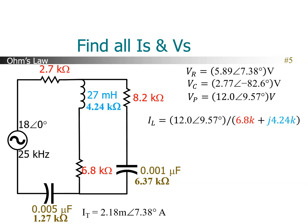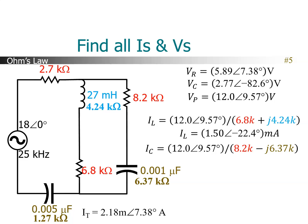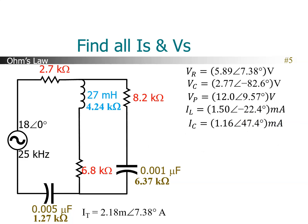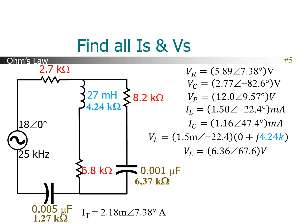Now I can use that Vp to find the branch currents. The current through the inductor and the 6.8K resistor is the voltage divided by the Z of that branch: 6.8K + j4.24K. That gives us a current of 1.5 milliamps at angle −22. Now I'll do the same thing with the other branch — the current through the capacitor and the 8.2K resistor. That works out to be 1.16 ∠47.4 milliamps. The voltage across the inductor is that branch current, 1.5 mA ∠−22, multiplied by the Z of the inductor, 0 + j4.24K. That gives us 6.36 volts at angle 67.6.